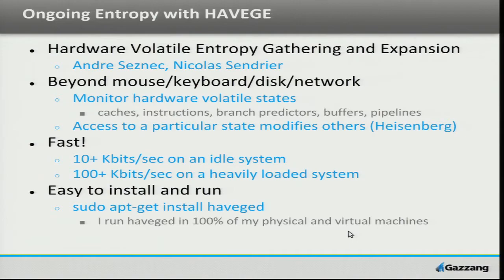You guys are way ahead of me — Haveged. Haveged is another great way of getting that ongoing entropy. In fact, I run Haveged everywhere, 100%. It's in my default seed, my cloud init scripts add Haveged all the time. I've been pushing for Haveged to be in the default Ubuntu install. It's extremely fast — not three gigabits a second fast, but hundreds of kilobits a second, which is a lot of entropy. It keeps my entropy pool at 4096 bits full just about all the time. The more loaded a system is, the more entropy it generates — the more CPU instructions that happen, the more entropy it's able to gather. It works similarly to the DRNG from Intel, measuring the states of the registers on the virtual core and deriving entropy from that. It works really well in virtual environments and I highly recommend Haveged just about anywhere.